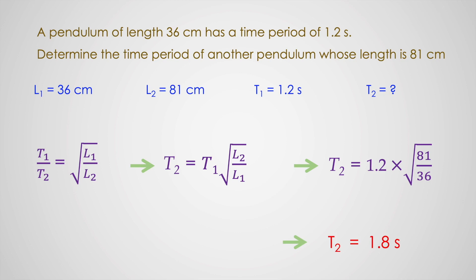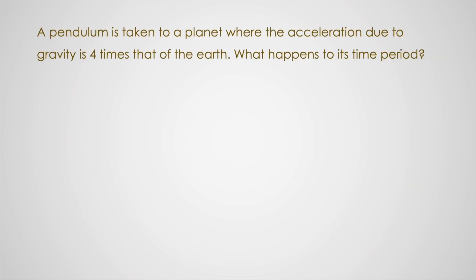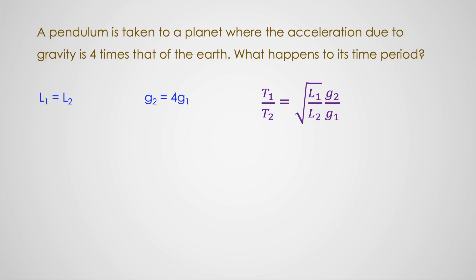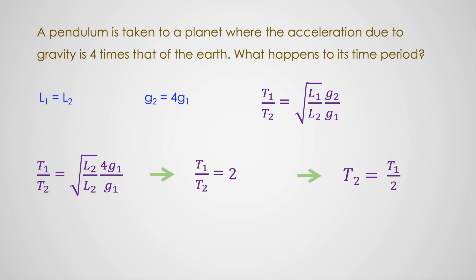Let us solve another simple problem. A pendulum is taken to a planet where the acceleration due to gravity is 4 times that of the earth. What happens to its time period? Because it is the same pendulum, L1 equals L2. The acceleration due to gravity on that planet g2 equals 4·g1. Using the formula T1/T2 equals √(L1·g2 / L2·g1), we replace the values and get T1/T2 equals 2, meaning T2 equals T1/2. The time period of the pendulum on that planet reduces to half that on earth.